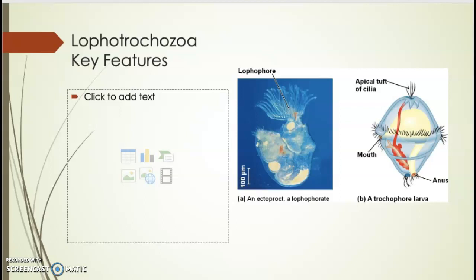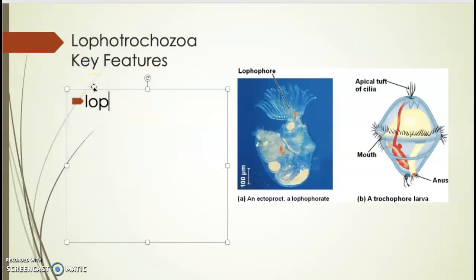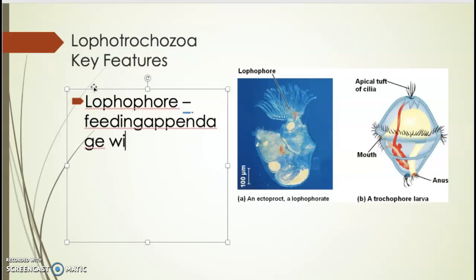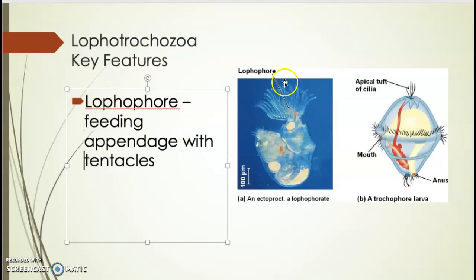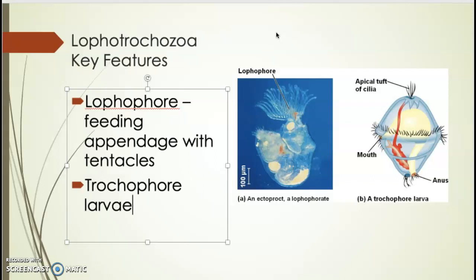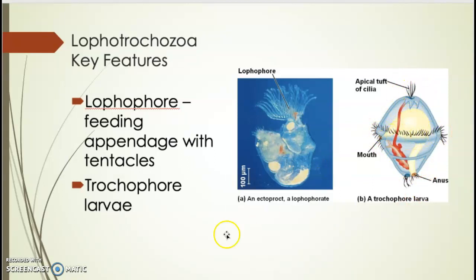The parallel group to Platyzoa within Spiralia is Lophotrochozoa. The two key features of this group are: first, the lophophore, a feeding appendage with tentacles — it's a tube-like structure with tentacles on top used to grab and pull in food; and second, a trochophore larva stage — a dome-shaped larval form with cilia on the bottom and around it. That larval stage is a key identifying feature of Lophotrochozoans.